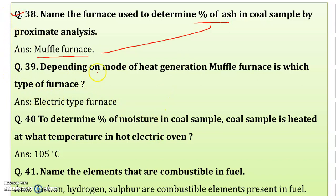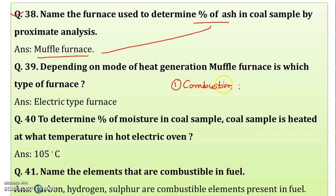Depending on mode of heat generation, what type of furnace is a muffle furnace? There are two types of furnaces: combustion type, where fuel is used to generate heat, and electric type. A muffle furnace is an electric type furnace. Your blast furnace is the combustion type of furnace.